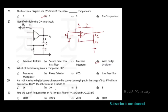Next question: which of the following is not a component of a PLL (phase-locked loop)? The options are: A — frequency multiplexer, B — phase detector, C — VCO, D — low-pass filter. A frequency multiplexer is not a component of a PLL; option A is the correct answer.